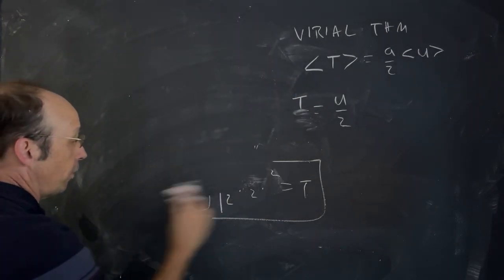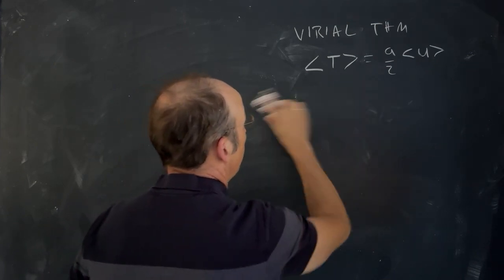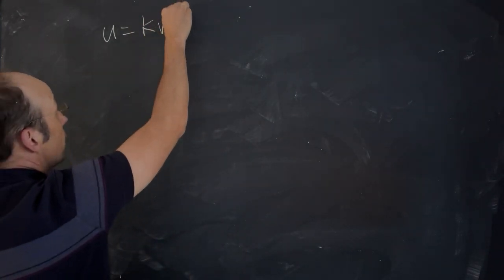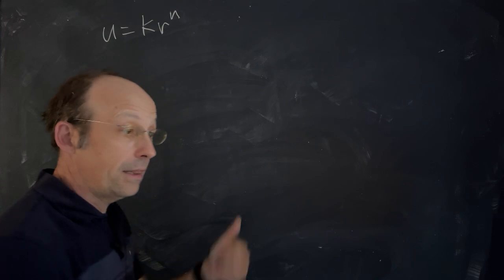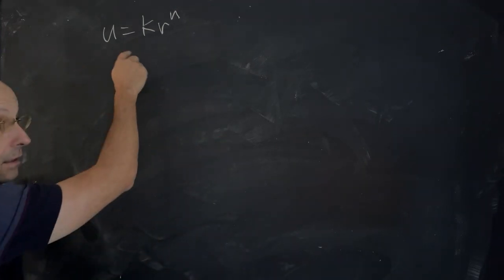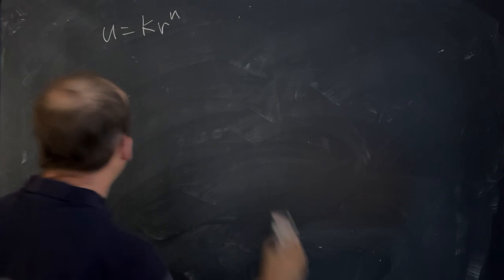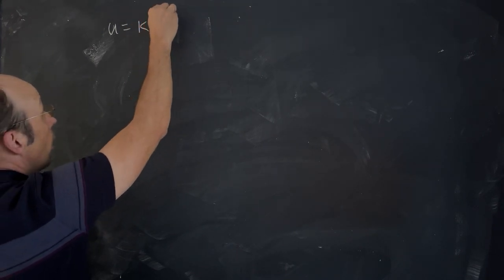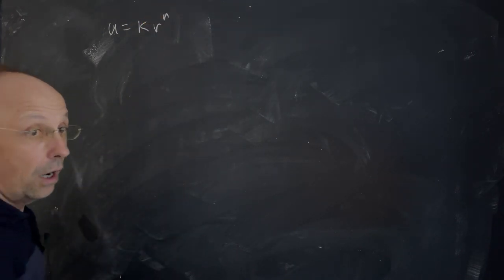The homework problem from Taylor said show that if you have U equals the potential energy term k r to the n, then this works with the Virial Theorem. So let's take this. U equals k, where that's a constant, r to the n, where n is an integer.